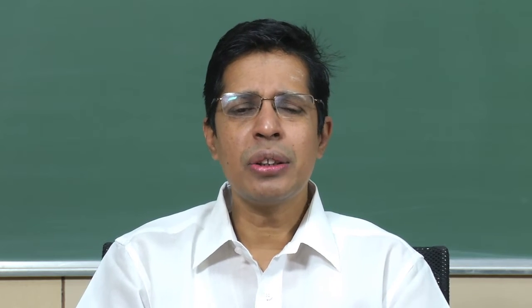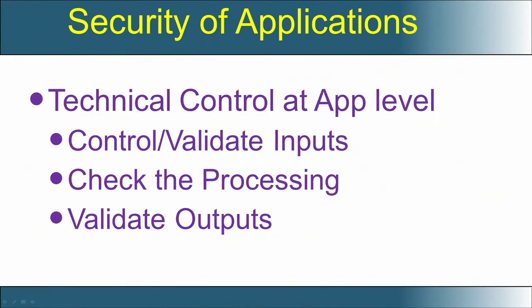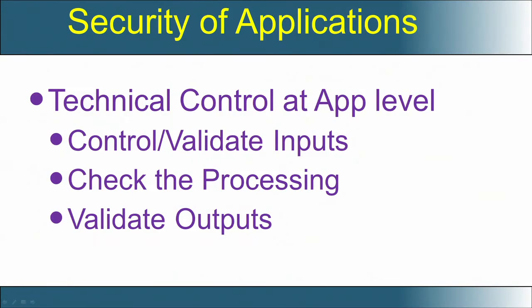Now we will see controls that could be applied at an application level. We have seen that controls are very important to implement information security policies. We have seen controls for people, talked about access control and passwords. Now we will see controls on processes and technology, specifically the applications.